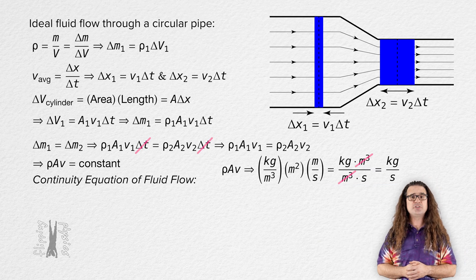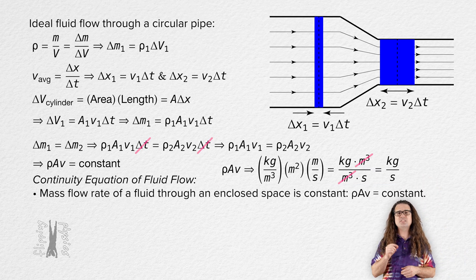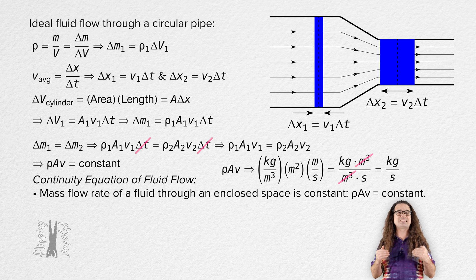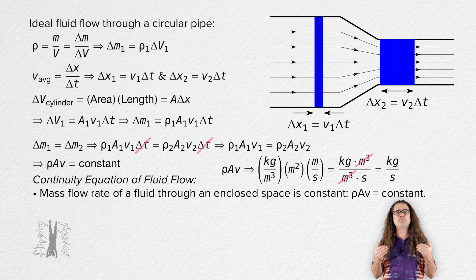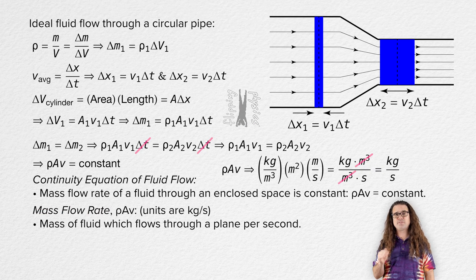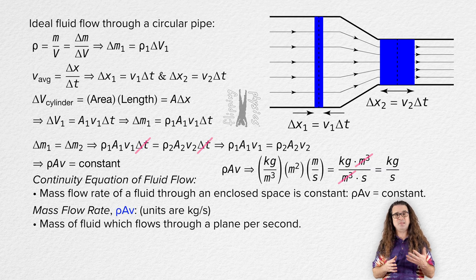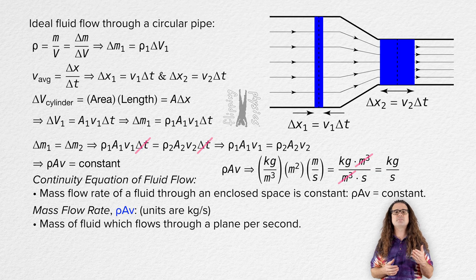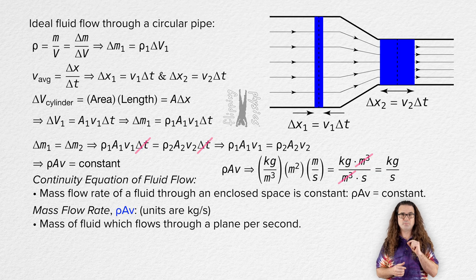The continuity equation of fluid flow states that the mass flow rate of a fluid in an enclosed space is constant. Mass flow rate is an important term — it is the mass of the fluid which flows through a plane per second, and it equals the density of the fluid times the cross-sectional area of the plane times the velocity of the fluid flowing through the plane.